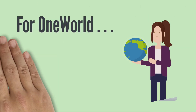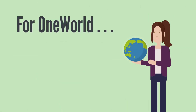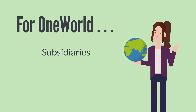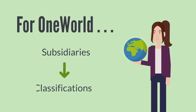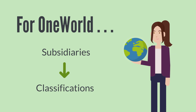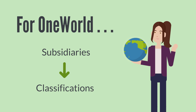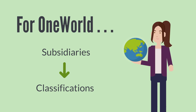If you have OneWorld, then the primary means of organization for your company is its subsidiaries. You would use the classifications, however, within each subsidiary. That's why, when you create new classification records, you will always have the option of associating the classification with a subsidiary.